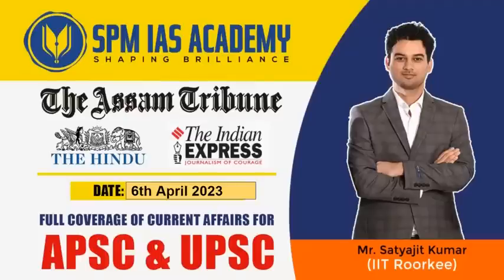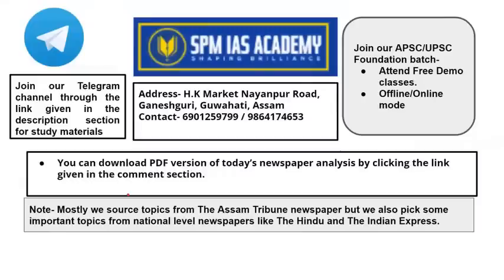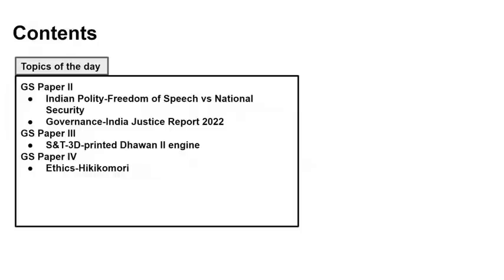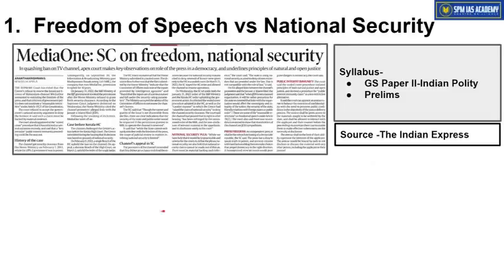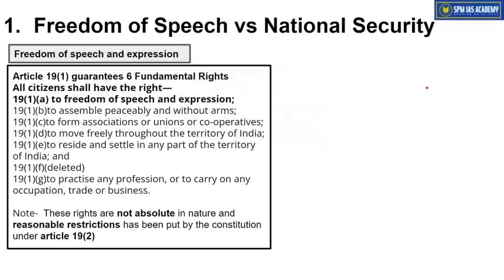Hello and welcome to SPMIS Academy. Today we will analyze important newspaper articles of 6th April 2023. You can download the PDF version of today's newspaper analysis by clicking the link given in the comment section. The first article is about freedom of speech versus national security, which is important from GS Paper 2 Indian Polity point of view.